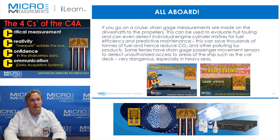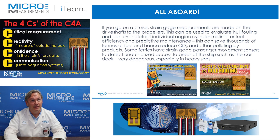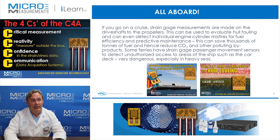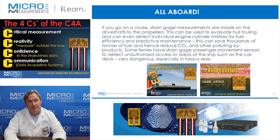If you go on a cruise, strain gauge measurements are made on the drive shafts of the propellers. This can be used to evaluate hull fouling and even detect individual engine cylinder misfires for fuel efficiency and predictive maintenance — saving thousands of tons of fuel and hence reducing CO2 and other polluting byproducts. Some ferries have strain gauge passenger movement sensors to detect unauthorized access to areas of the ship such as the car deck, which can be very dangerous, especially in heavy seas.